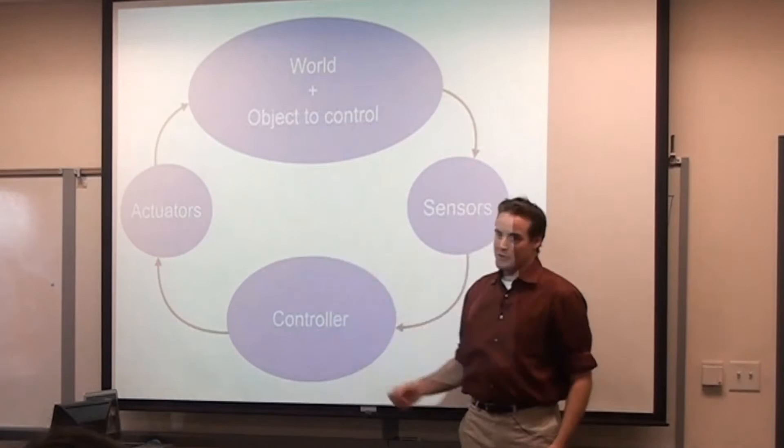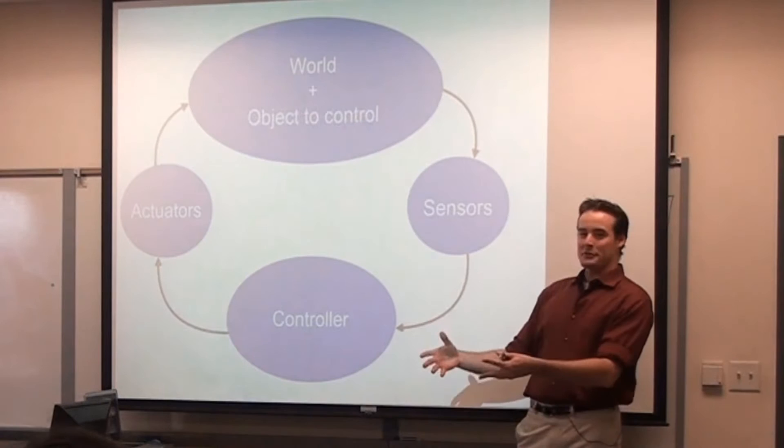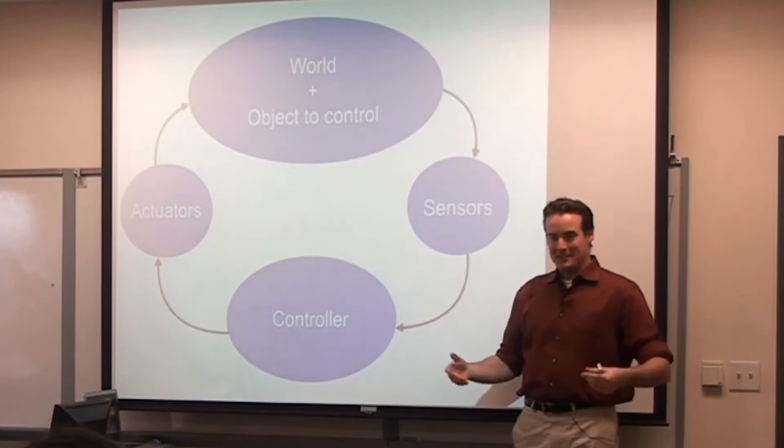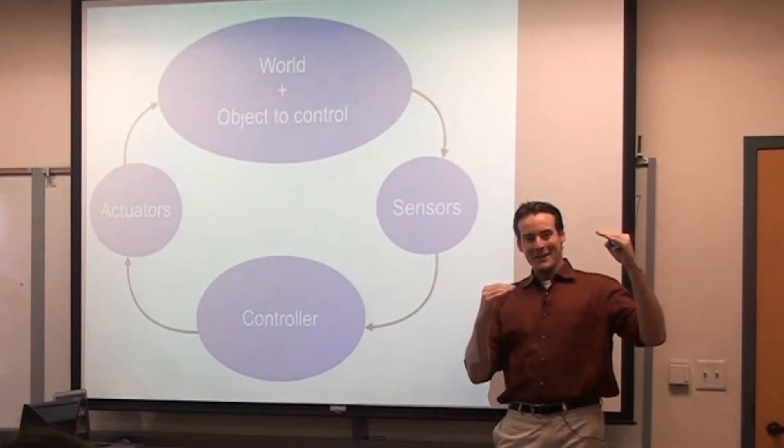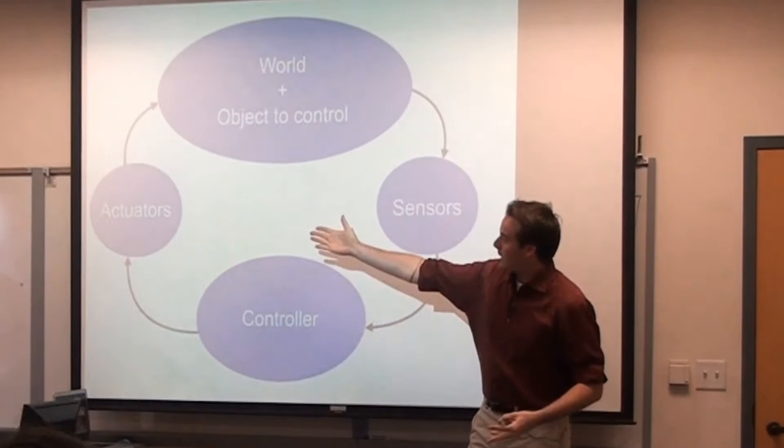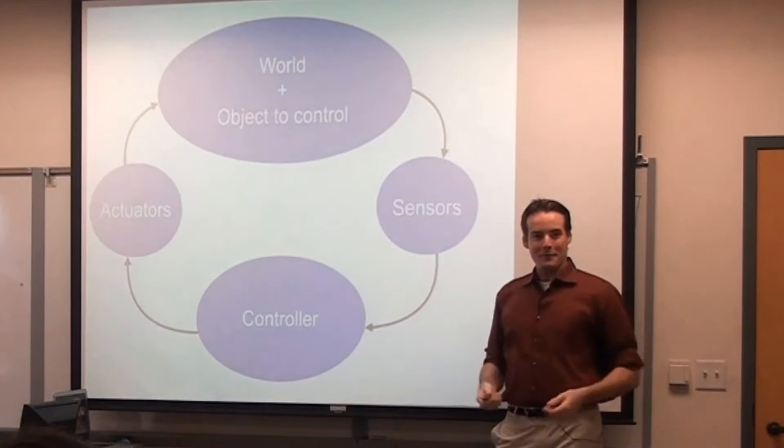In case you haven't heard of control theory before, the basic idea is this flowchart. There's some sort of stuff in the world we want to control, like the cruise controller — you want to control the speed of your car. Sensors on the wheels measure how fast the car is going, those are relayed to a controller like your car computer, which runs an algorithm to figure out: if you want to go 70 miles an hour but the sensors say you're only going 60, there's a 10-mile-an-hour gap. It uses the gas pedal and engine as an actuator to affect the real world. That's the high-level view of what control theory is all about.